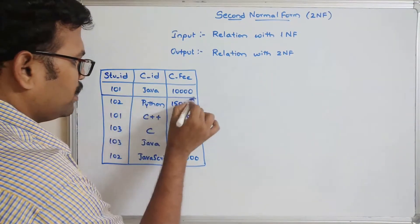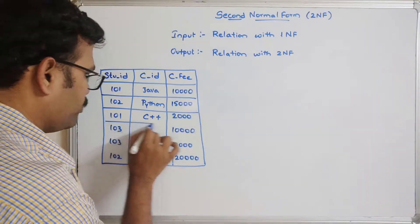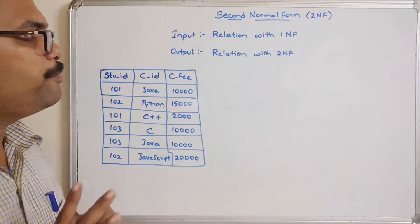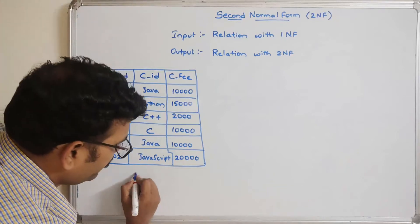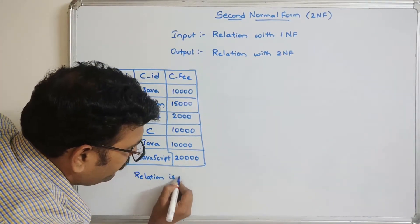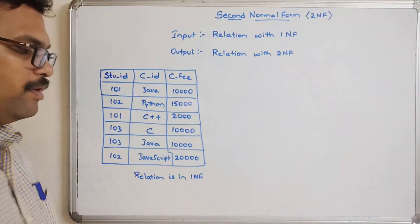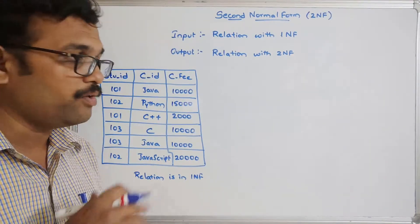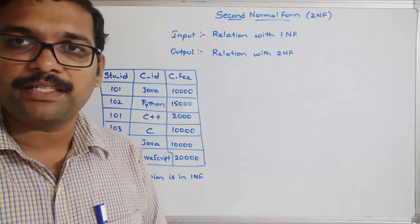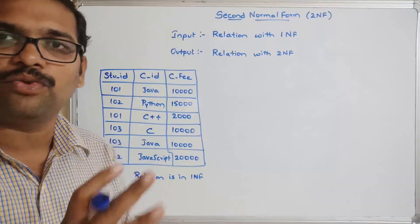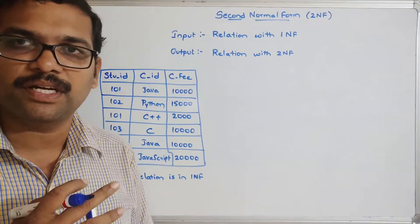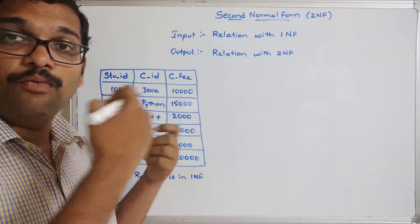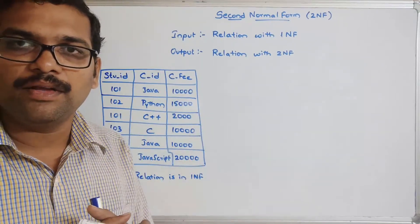First we check whether there are multi-valued attributes — that means multiple values for any single attribute. You can observe that for every column we have only one value, so this relation is in 1NF. We have to check whether this relation is in 2NF or not. For that, we find the functional dependencies and check whether there are any partial functional dependencies. If there are, we say the relation is not in 2NF and we must remove that partial dependency by decomposing the relation into sub-relations.